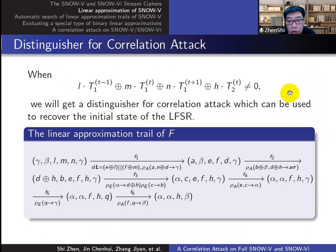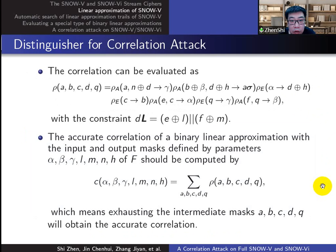The linear approximation process is shown here, and we can search for linear trails contained in it. The correlation of a linear trail can be calculated by this formula, and get the accurate correlation of an approximation by summing up all the correlations of the trails contained in it.